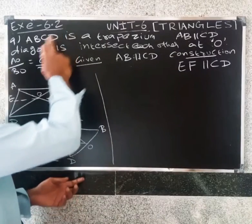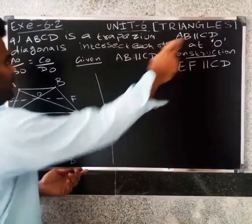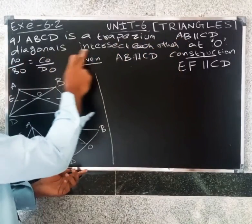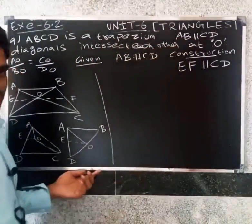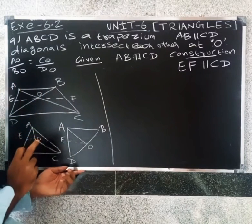Welcome friends. I am going to solve this 90 question. ABCD is a trapezium, meaning AB parallel to CD, and the diagonals intersect each other at point O. We have to prove that AO divided by BO equals CO divided by DO.